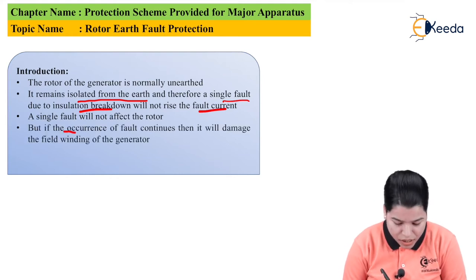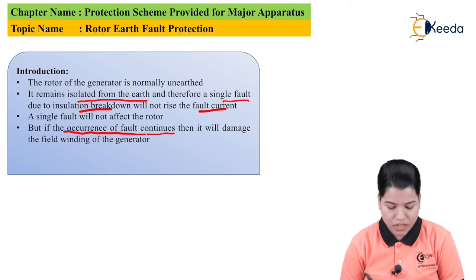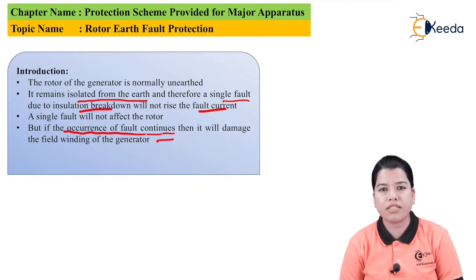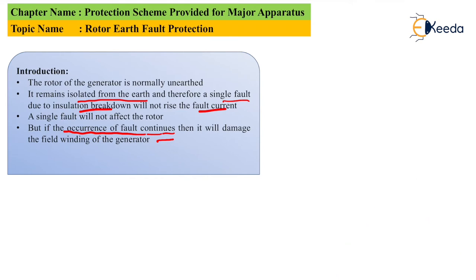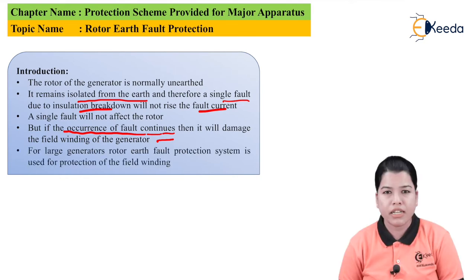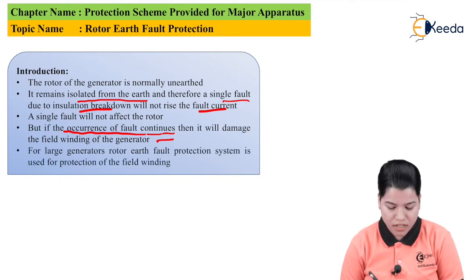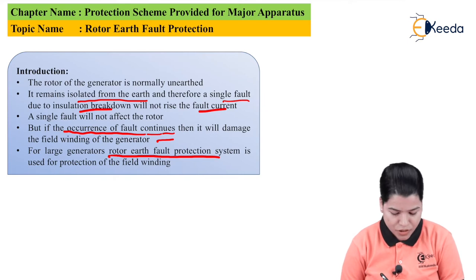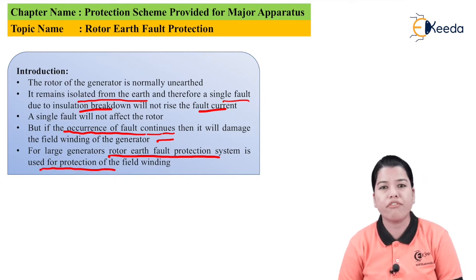But if the occurrence of the fault continues, it will damage the field winding of the generator. One fault will not affect the rotor, but if the fault persists — that is, if the fault occurs again and again — then the field winding of the generator will get damaged. Therefore, for large generators, a rotor earth fault protection system is used for the protection of the field winding.